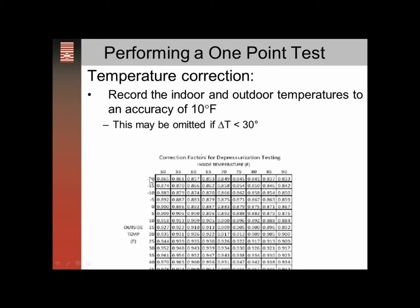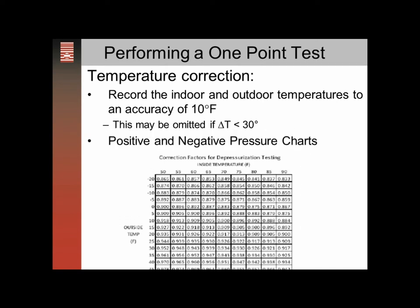For example, if you have an outside temperature of zero degrees — as sometimes happens in January in Minneapolis — and 65 degrees indoors, you'd have 0.887 as a multiplier, which is more than a 10% correction. So you can have significant temperature corrections when you have extreme temperatures.